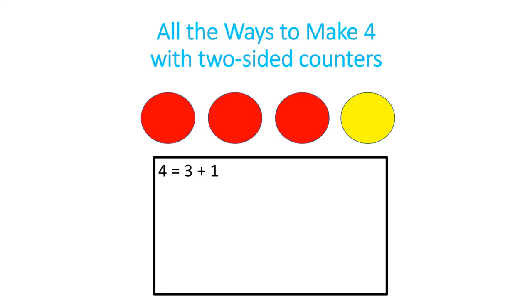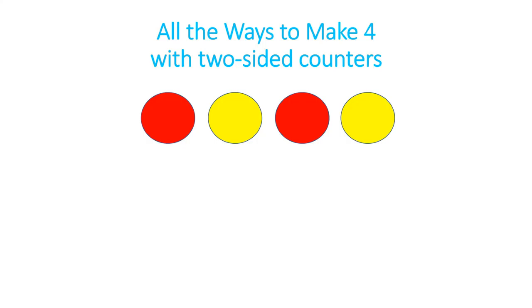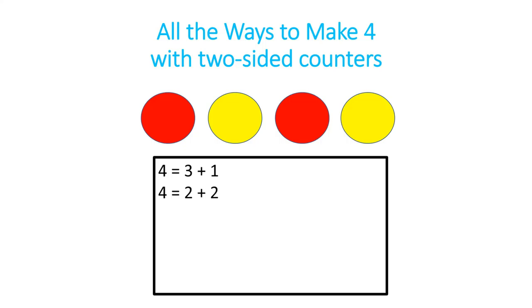So when that happens this next time, maybe you get this arrangement. Now if you want, you can reorder them so that the reds are next to each other and the yellows are next to each other. You can just leave them like this and kind of notice that what you found was two red and two yellow, and that's another way to make four.